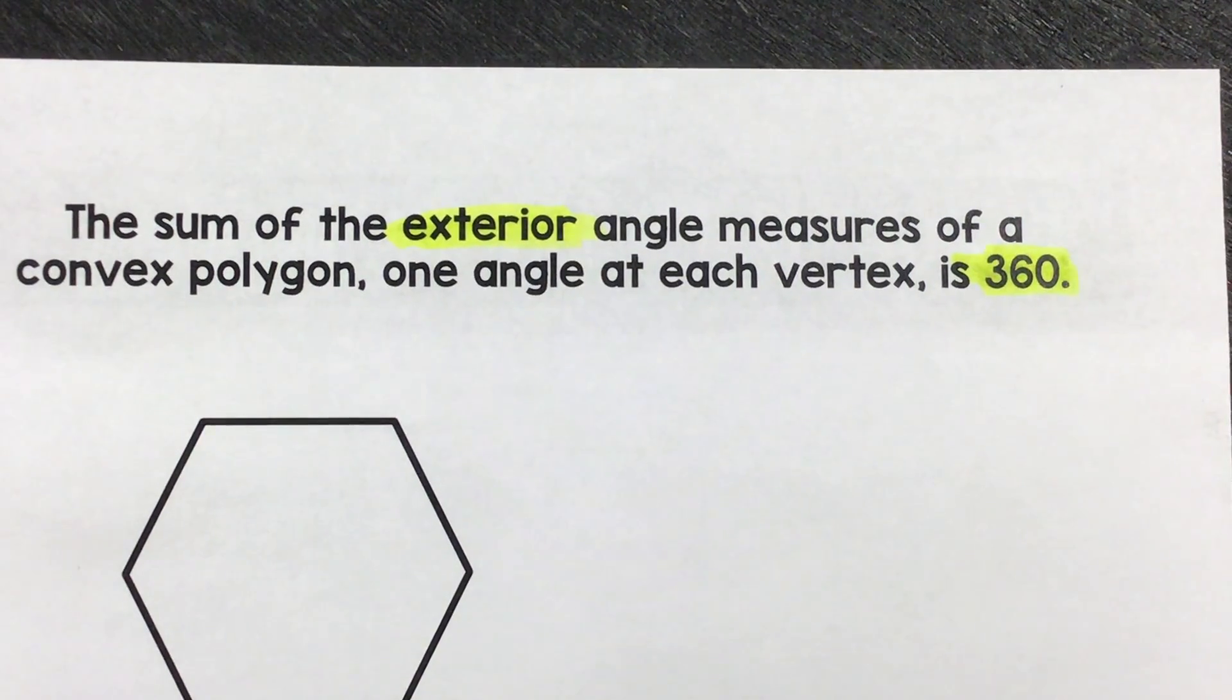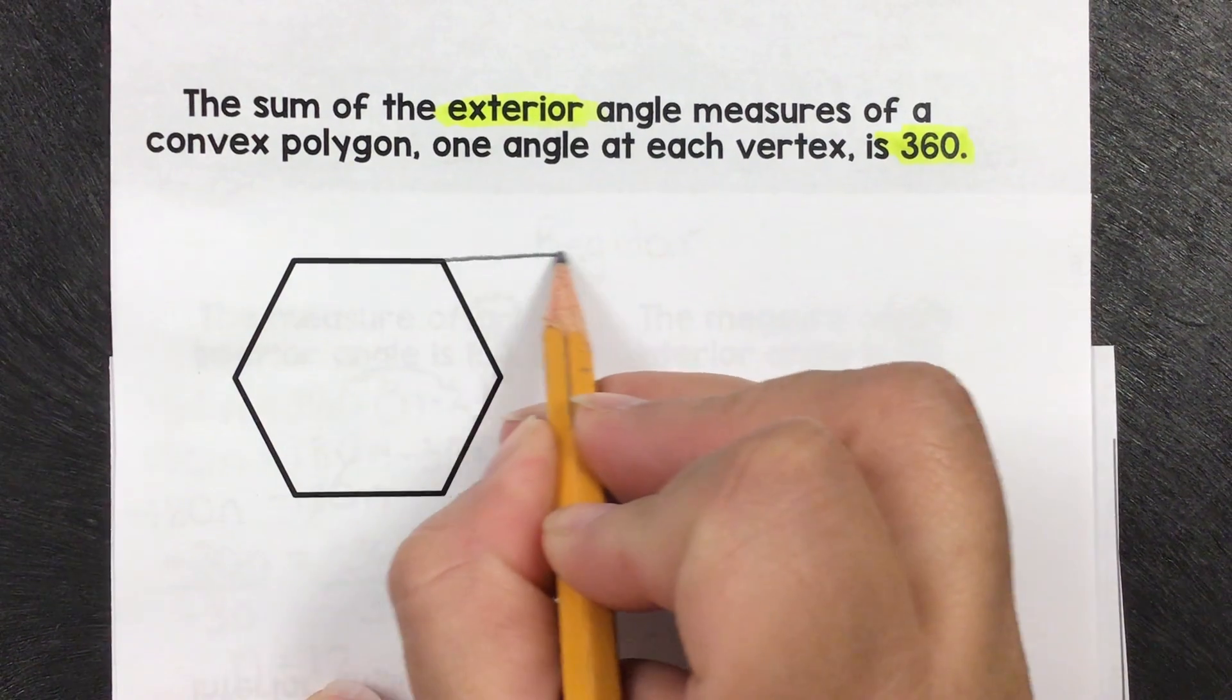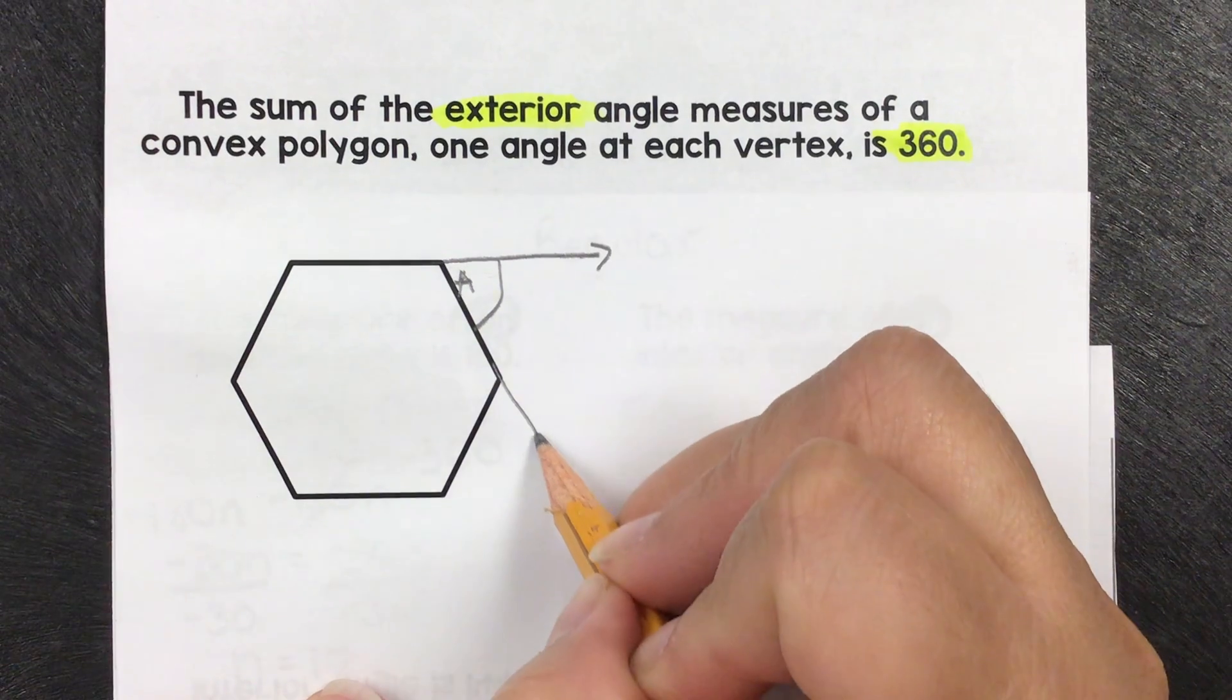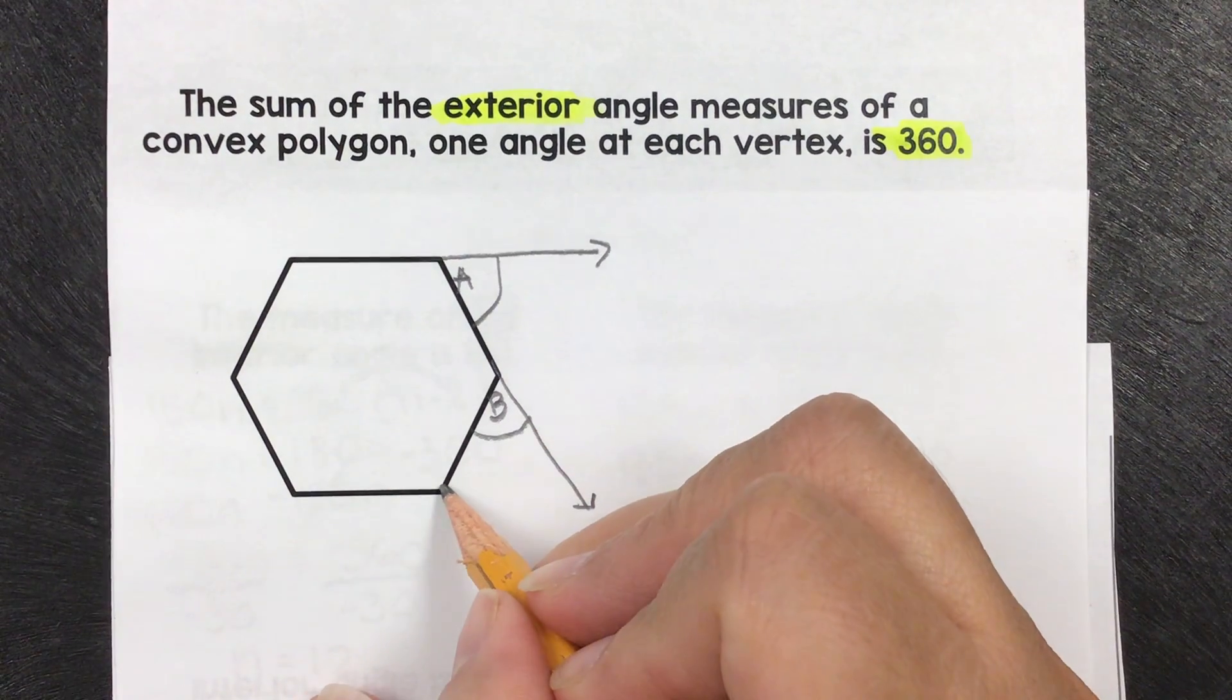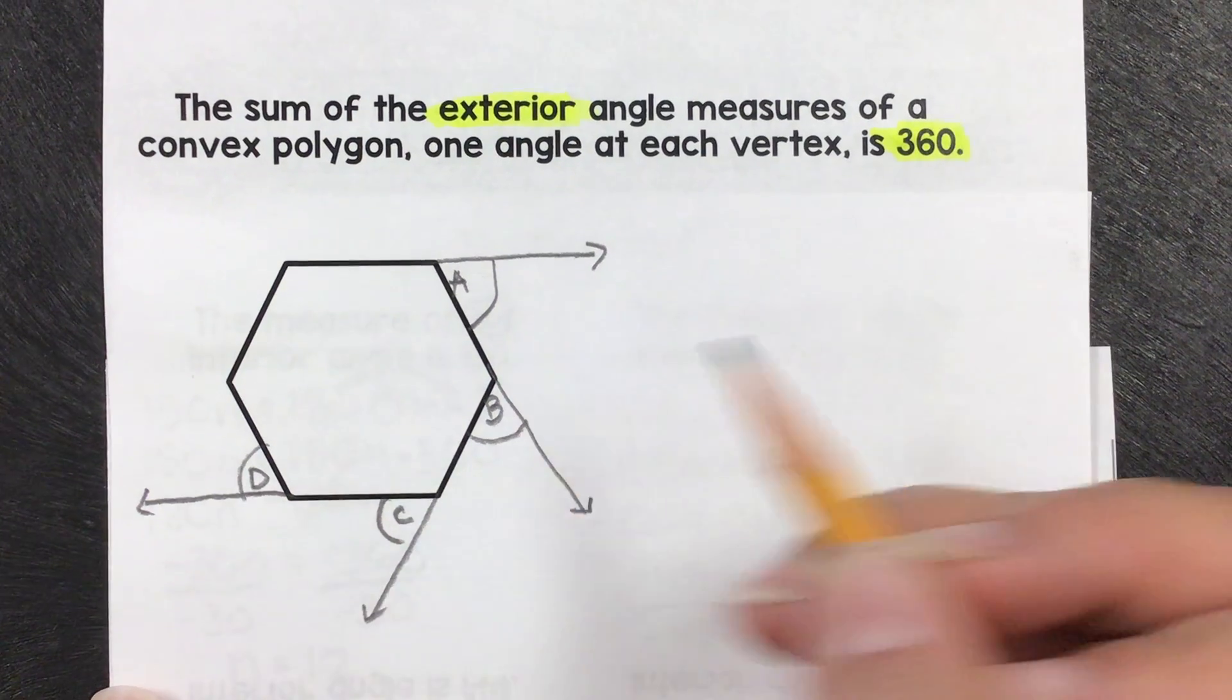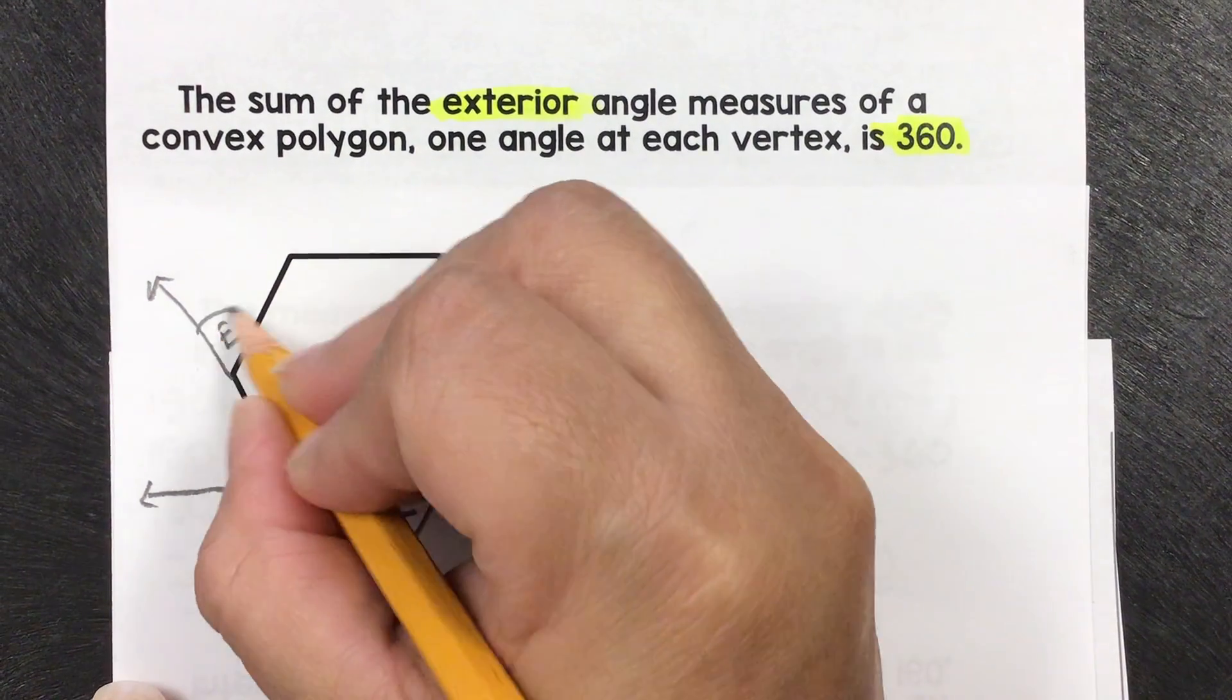So what that means here is that we're going to extend this one out, and we're talking about the angle on the outside. I'm going to call this one a, this angle on the outside. If I keep going with that pattern, I'm going to extend out this way and call this one b. Extend this out, this one will be c. Extend this out, this one will be d. It goes this way, e, and then f.